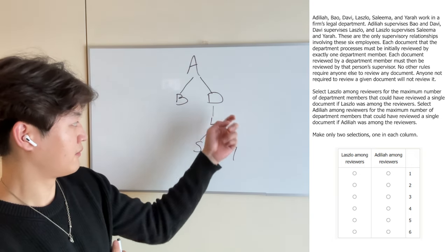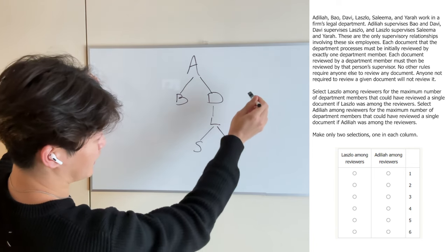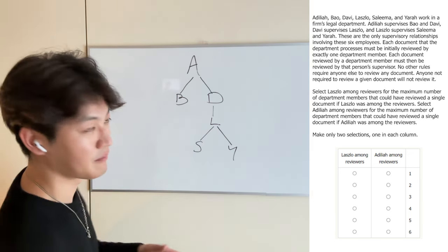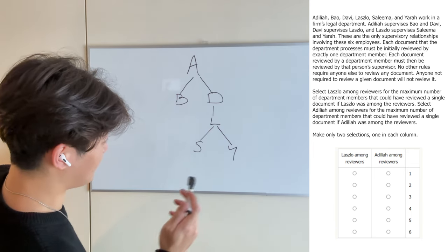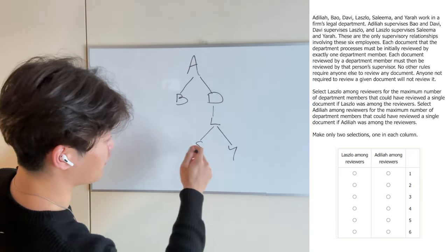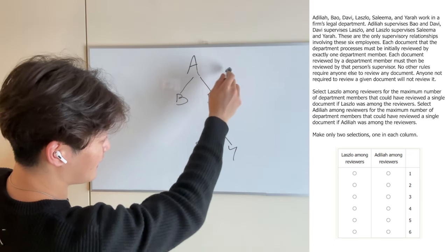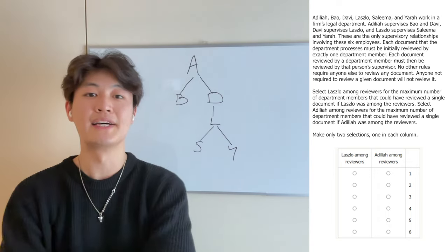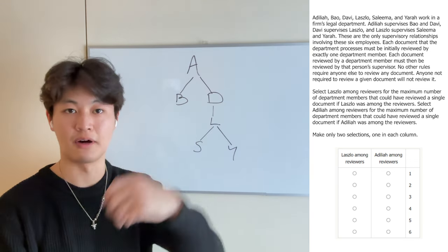We need to find the most people who would have reviewed a document if Laszlo was among them. Here's Laszlo. If Laszlo reviews it, it triggers David, who reviews it. And if David reviews it, then Adila has to review it. So that's three people — we have a starting point. But then we keep in mind that Laszlo actually supervises two people, and the only rule says if somebody reviews it, their supervisor reviews it. So if either Salim or Yarra reviews it, that means Laszlo has to review it — one more person than if Laszlo started the chain. So the maximum would be four people from the bottom all the way to the top.